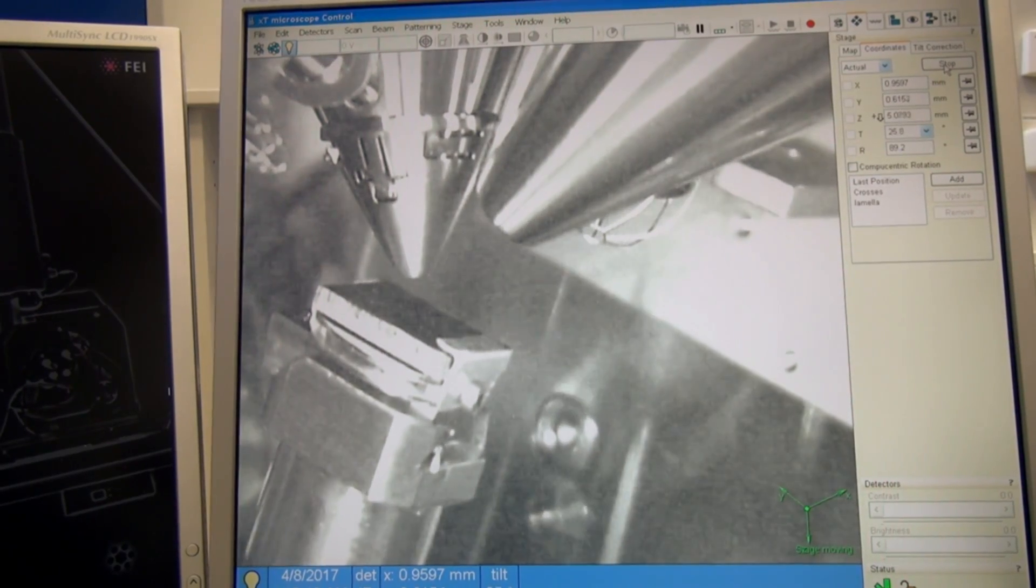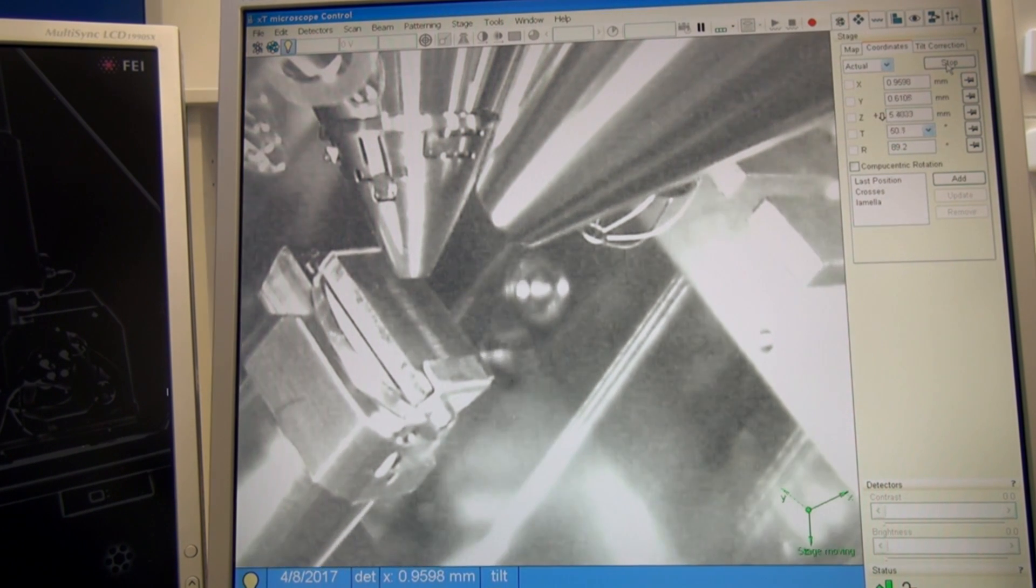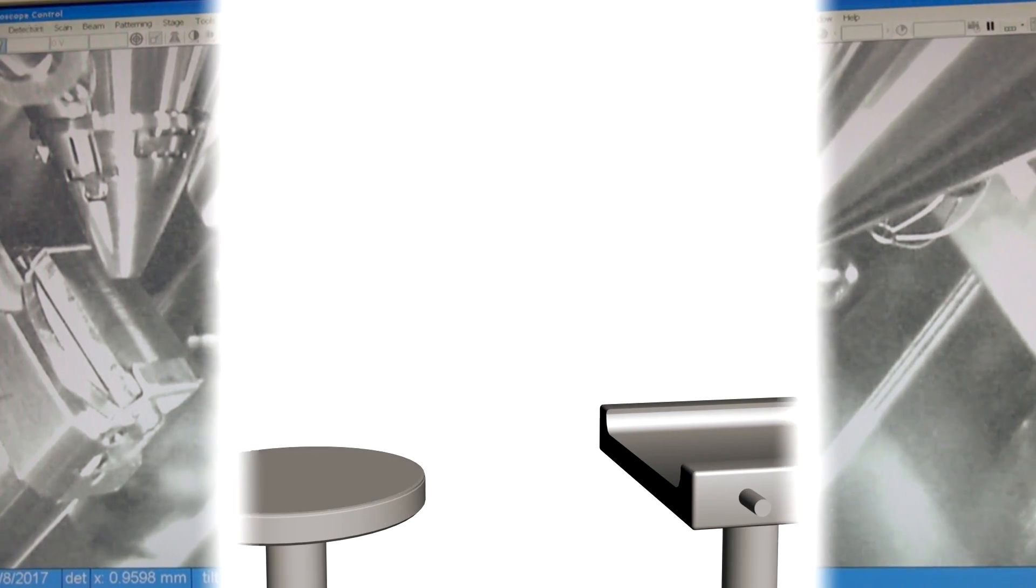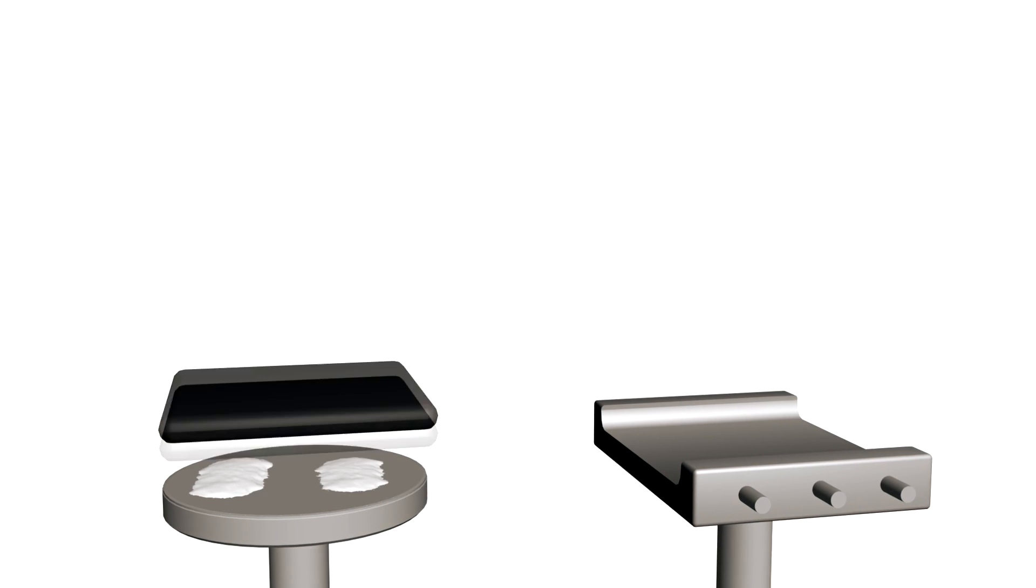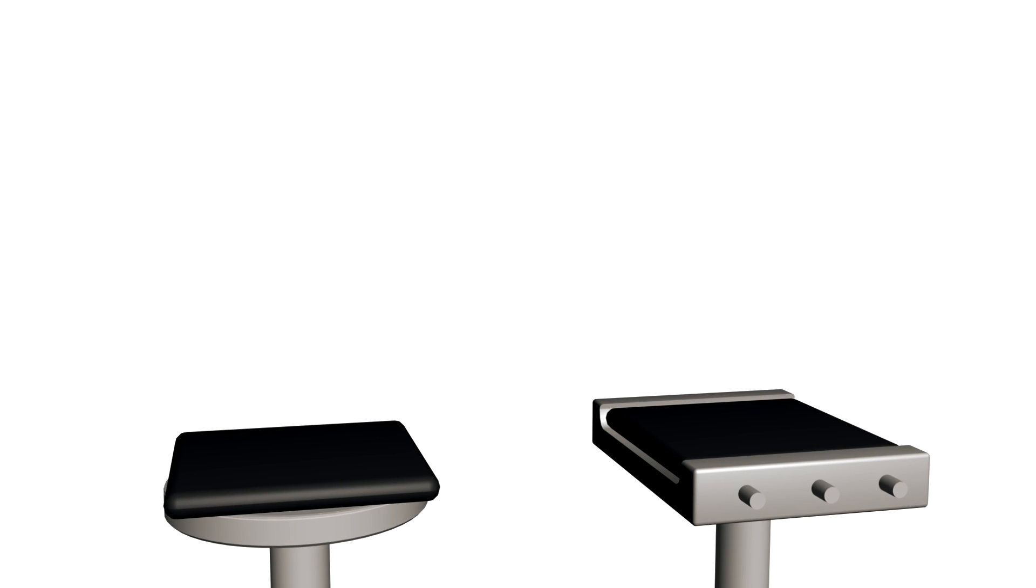In order to use the ion gun, the studied substrate needs to be tilted. Therefore, the sample must be firmly attached to the holder. This can be achieved with the help of a silver paste or mechanical holders.